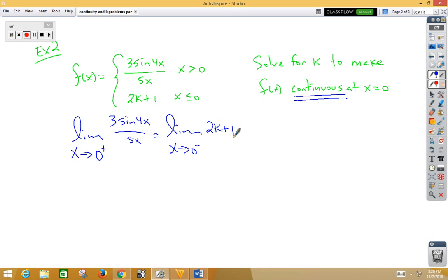A nifty little trick to remember whether you're coming from the right or to the left: this arrow seems to be pointing to the right, therefore right-side limit. This arrow seems to be pointing to the left, so left-sided limit.